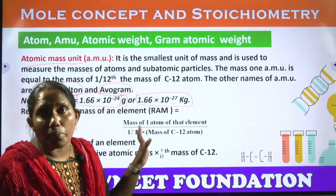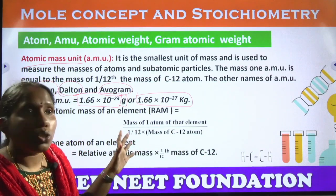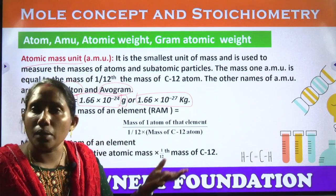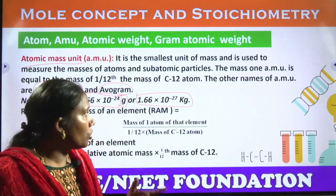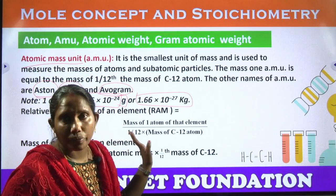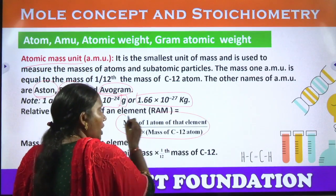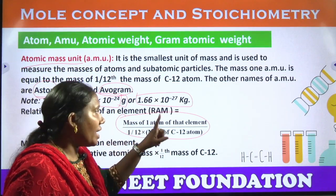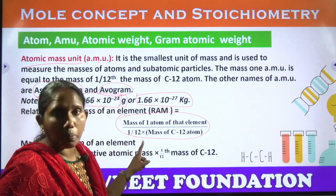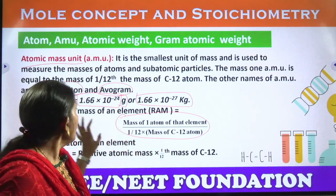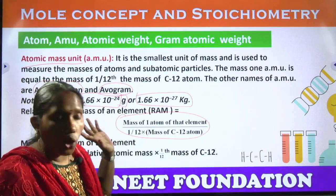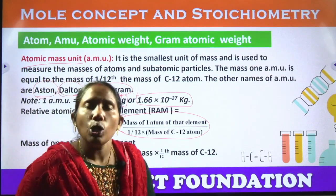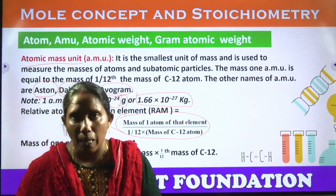The relative atomic mass (RAM) of an element is the mass of one atom of that element divided by one-twelfth part of the C-12 isotope's mass. If you want to find the atomic mass of nitrogen, oxygen, sodium, or helium, you take the mass of one atom of that element divided by one-twelfth of the C-12 isotope mass — that is called the relative atomic mass, RAM.